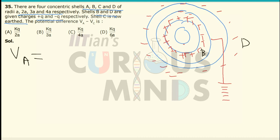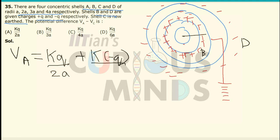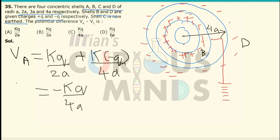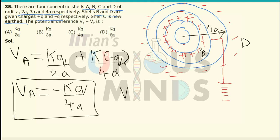The potential at point A will be equal to KQ divided by the radius of shell B, which is 2A, plus the contribution from shell D which has radius 4A. This gives a term of negative KQ divided by 4A. This is the potential at point A.